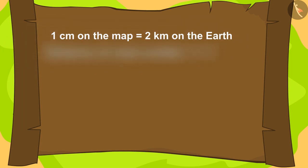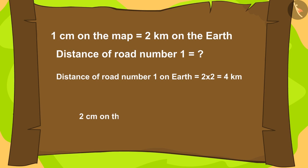What is the distance of road number 1 in this way? 2 times 2 equals 4 km.